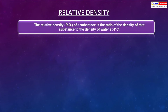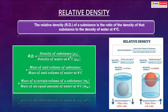Relative density: the relative density of a substance is the ratio of the density of that substance to the density of water at 4 degrees Celsius. It can be calculated as: mass of any volume of a substance divided by the mass of an equal volume of water; or as density of substance divided by density of water at 4 degrees Celsius; or as mass of a unit volume of substance divided by mass of a unit volume of water at 4 degrees Celsius.